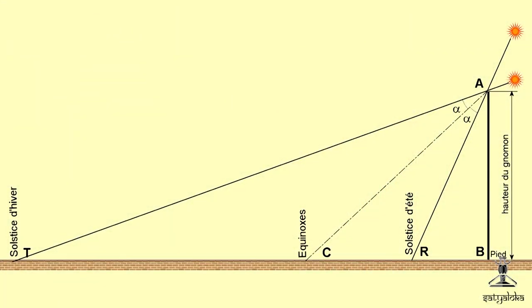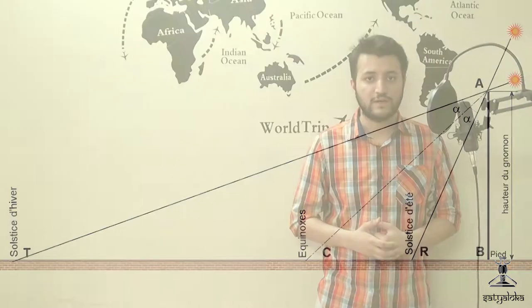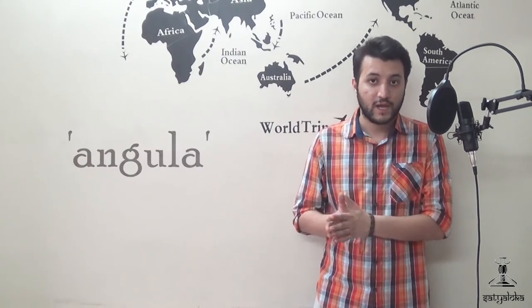The shadow of a gnomon falls to the west after sunrise and the length of the shadow is longest at sunrise. As the sun moves upwards in the sky the length of the shadow begins to decrease. The unit angula is used to measure the length of the shadow. The eight Muhurtas from sunrise to noon are calculated and they are as depicted.